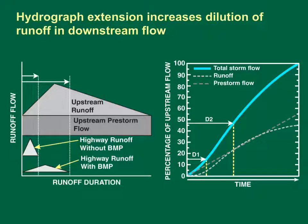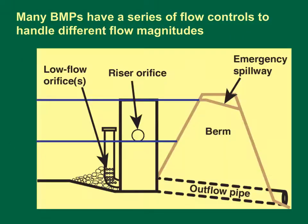For example, using grassy swales to route runoff instead of sewer pipes may slow the discharge of runoff, and use of a retention pond also may extend the outflow hydrograph. In this example, only 15% of upstream storm flow occurs during duration 1, and about 55% occurs during duration 2. Thus, use of drainage designs and best management practices that extend the flows from the site of interest results in increased dilution.